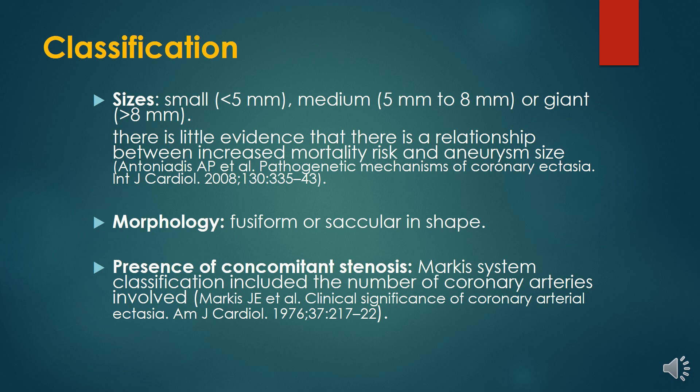Sizes could be less than 5 mm (small), medium 5 to 8 mm, or giant more than 8 mm. There is little evidence of a relationship between increasing mortality risk and aneurysm size. Morphology could be fusiform or saccular, and the presence of concomitant stenosis — the Marcus system classification — can be used.